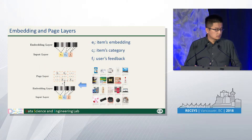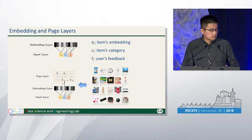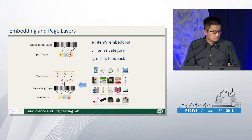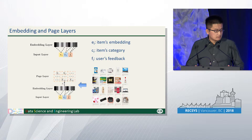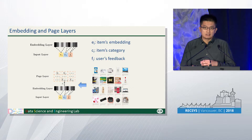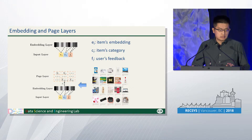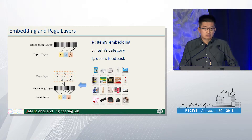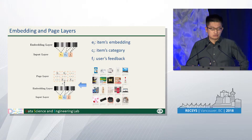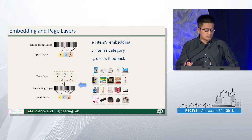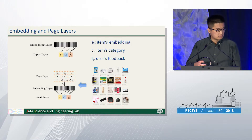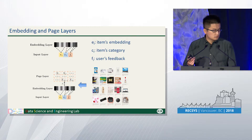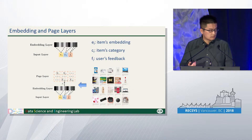The input of the encoder is a representation of the items in the page. We have item embeddings which are pre-trained by the company, and we have the item category because we would like to capture user's preference in different categories and generate diverse and complementary recommendations. Finally, we have the user's feedback because we would like to know the user's interest in one page. We input these three types of information into the embedding layer and get the item representations of each item.